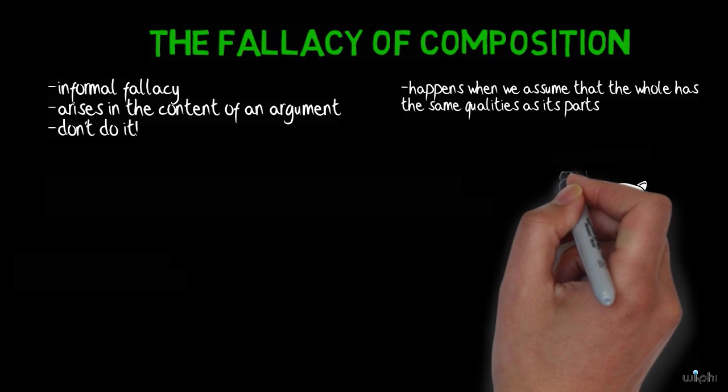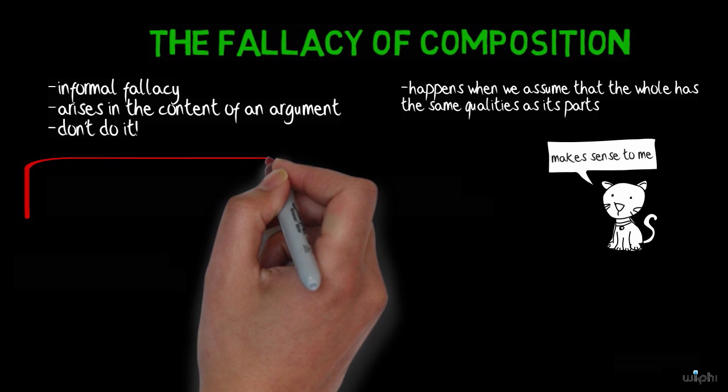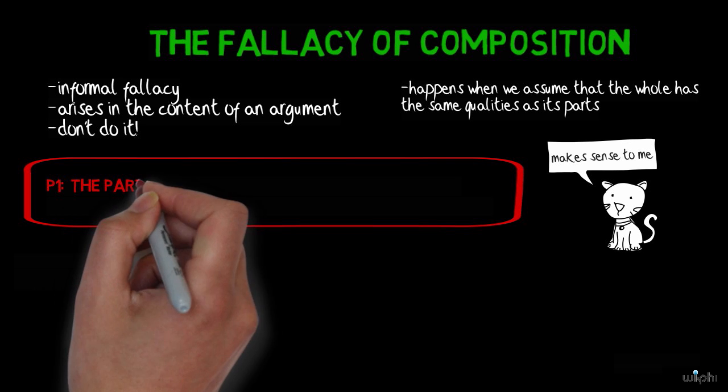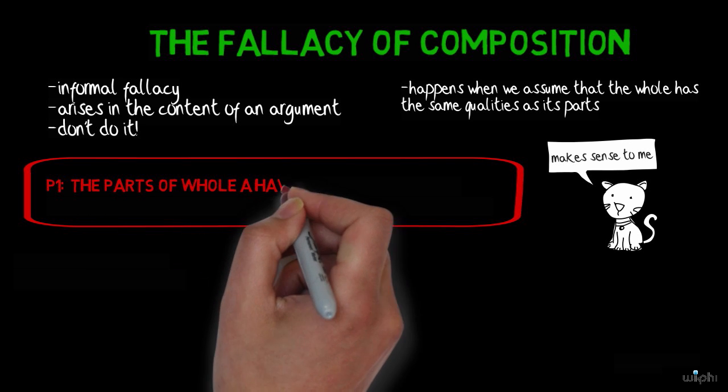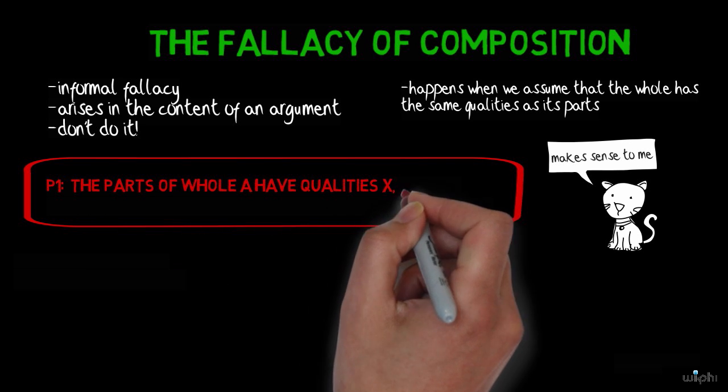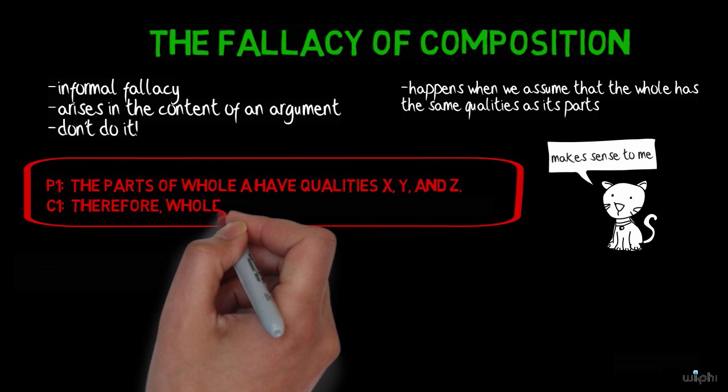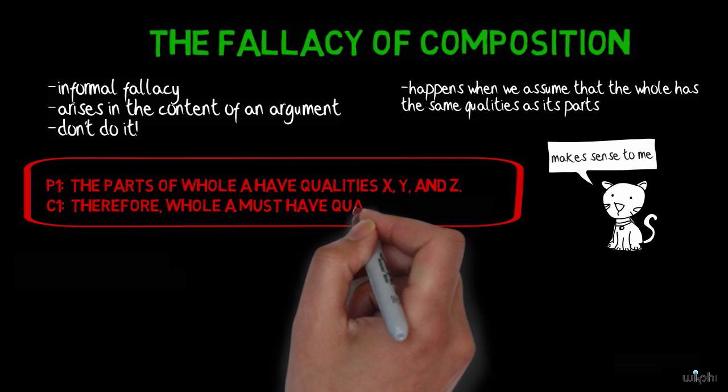Sounds problematic, right? But let's represent this logical error more formally. Reasoning would be something like this. Premise 1: The parts of whole A have qualities X, Y, and Z. Conclusion 1: Therefore, whole A must have qualities X, Y, and Z.